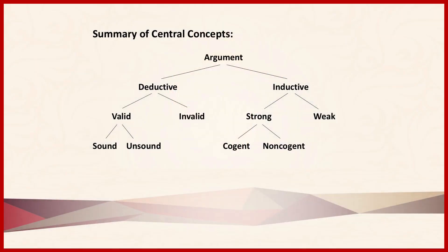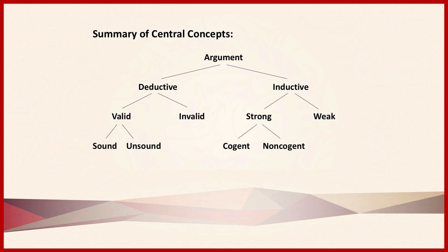So let's conclude by looking at the concepts covered in this section. Recall that we began with the notion of an argument — a set of propositions, one of which, the conclusion, is claimed to follow from the others, the premises. At the most general level, arguments are distinguished into those that are deductive and those that are inductive. Deductive arguments are either valid or invalid. A valid deductive argument is one in which the conclusion follows necessarily from the premises. If a valid argument is also sound, that means it has all true premises, and then the conclusion is also true.